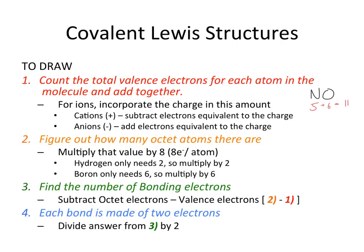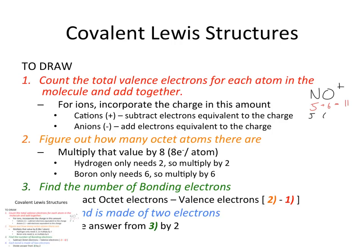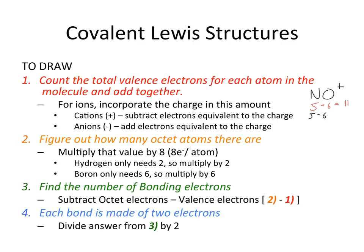If the molecule had a positive charge, like NO+, nitrogen still has five and oxygen still has six, but we've lost one electron due to the positive charge, so we subtract one and get 10. If it had a negative charge, like NO⁻, we add one electron because it has gained one, giving us 12. If it's a cation, subtract electrons equal to its charge; if it's an anion, add electrons equal to the magnitude of its charge.